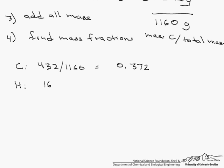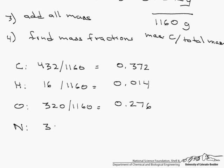For hydrogen, we have 16 grams, we divide it by 1160, and our mass fraction is 0.014. For oxygen, 320 grams divided by 1160 is 0.276. And finally with nitrogen, we have 392 grams divided by 1160, which is 0.338.